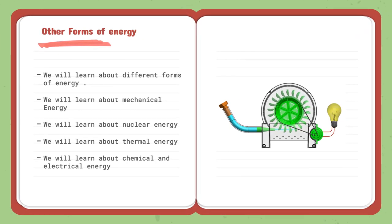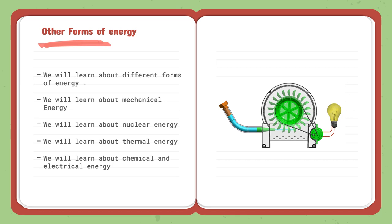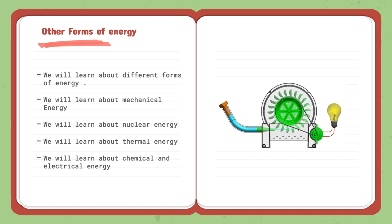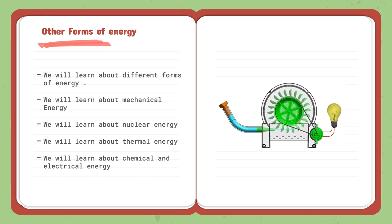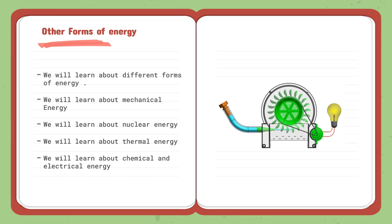The third lesson is other forms of energy. We are going to learn about different forms of energy, such as mechanical energy, nuclear energy, thermal energy, chemical, and electrical energy. We are going to know how energy is stored in different forms and how it's transformed — mechanical or nuclear in nuclear power, thermal in hot objects, chemical such as in food, and electrical such as in electricity.